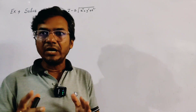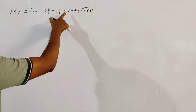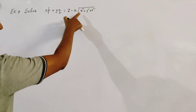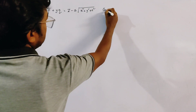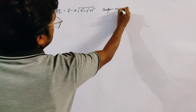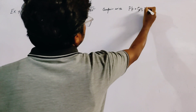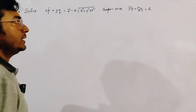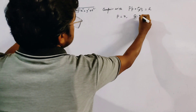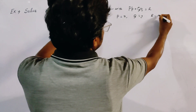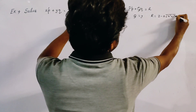We have to solve the partial differential equation given by xp + yq = z minus a into root under x² + y² + z².